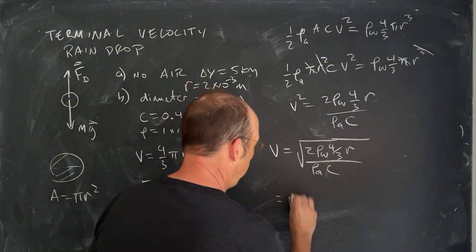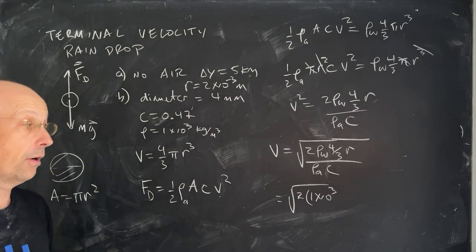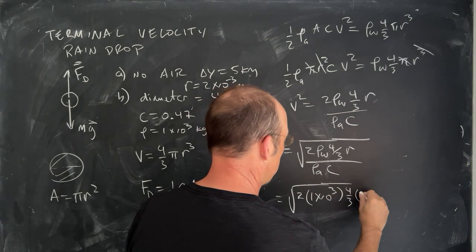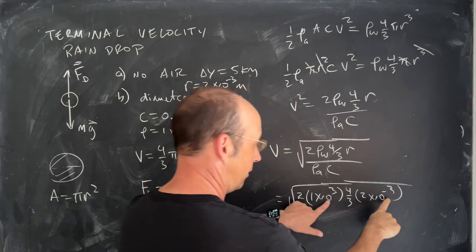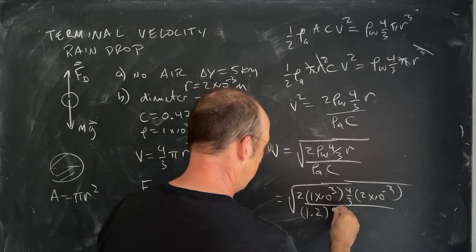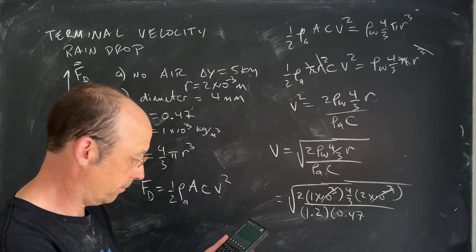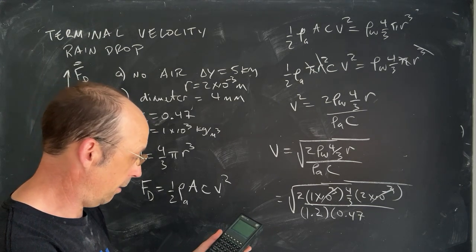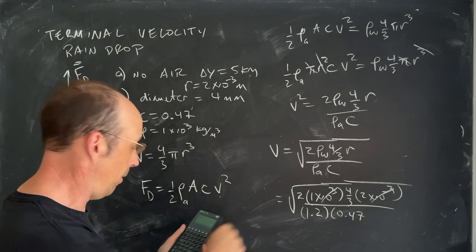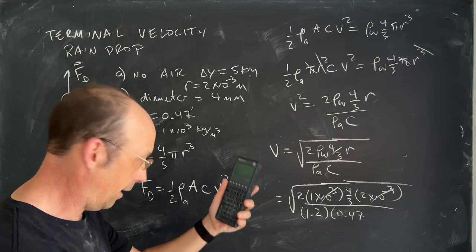Let's put in our numbers. Square root of two, the density of water is one times ten to the third. Remember, that's kilograms per cubic meter. It's a thousand kilograms per cubic meter. It's not one, you can't put one gram per cubic centimeter. And then I have four-thirds, and then I have r, which is two times ten to the negative third, but you'll notice there, ten to the third, and ten to the negative third. And then I have the density of air is 1.2, and then c is 0.47. So I'm going to go ahead and cancel those two, just to make things easier. Now I can put it in my calculator, and I get two times four times two divided by three, and then I can divide by 1.2 and 0.47, and then take the square root. I get 3.07.